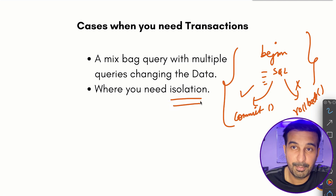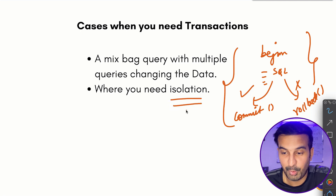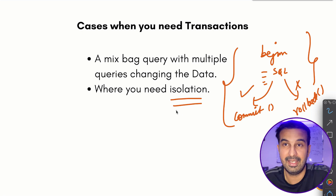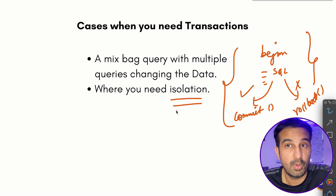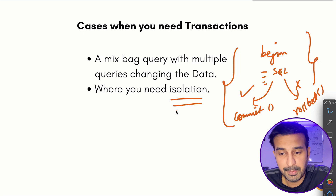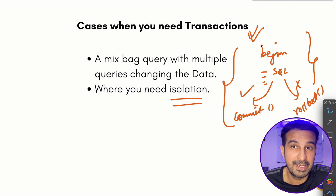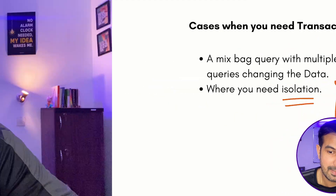Different frameworks provide different ways of implementing transactions, but the basic flow is: begin a transaction, perform all your SQL queries, commit if everything passes, and rollback if anything fails. I hope this video helps you understand where to use transactions and where to seriously consider using them when interacting with a database.